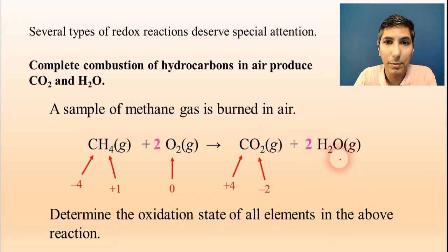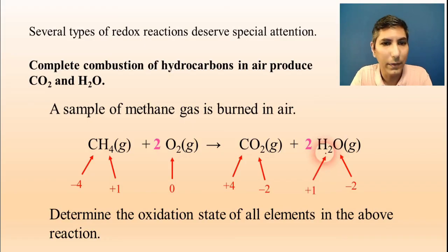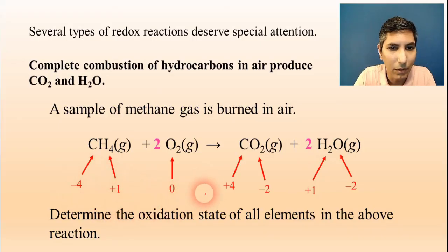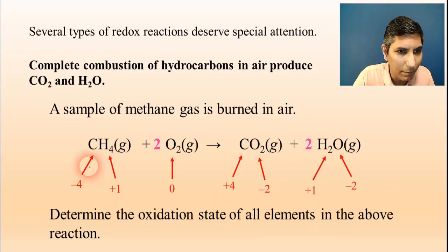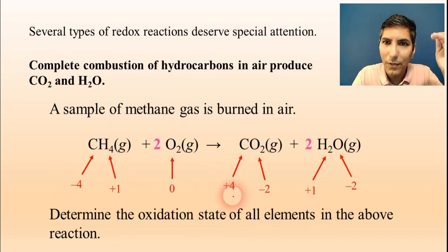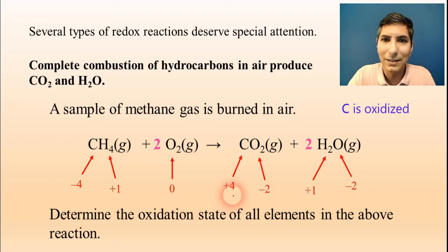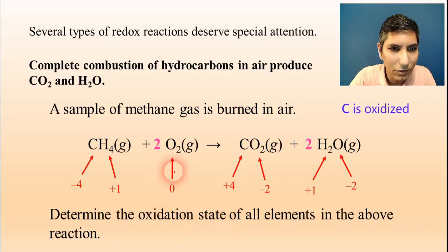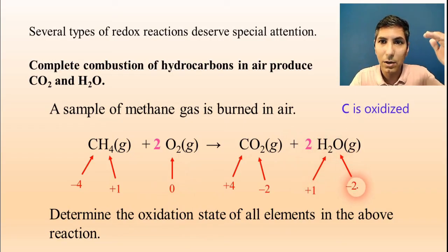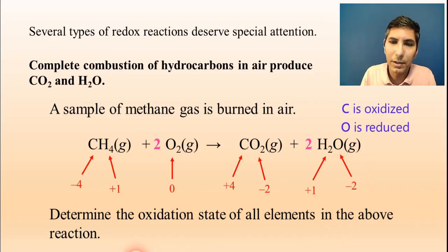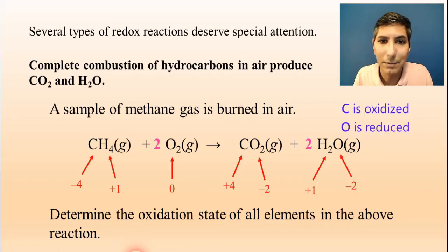Looking at the oxidation states across the reaction: carbon's charge goes from negative four up to positive four — when a charge goes up, that's called oxidation, so carbon is being oxidized. Oxygen's charge goes from zero down to negative two — since the charge is going down, oxygen is being reduced. You can use the concept of determining oxidation state to identify what's being oxidized and reduced in a reaction.